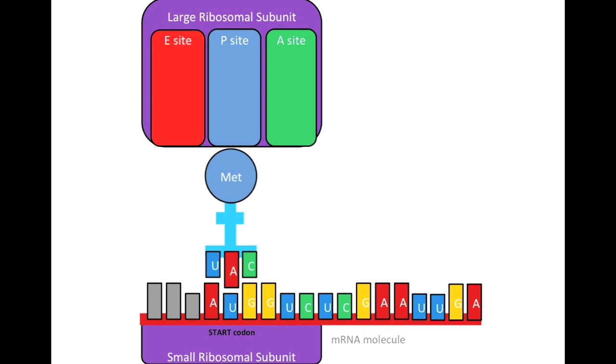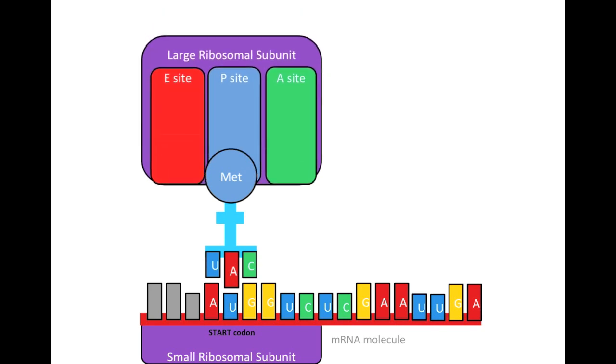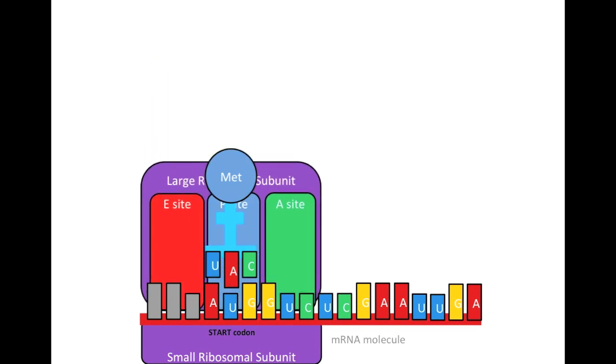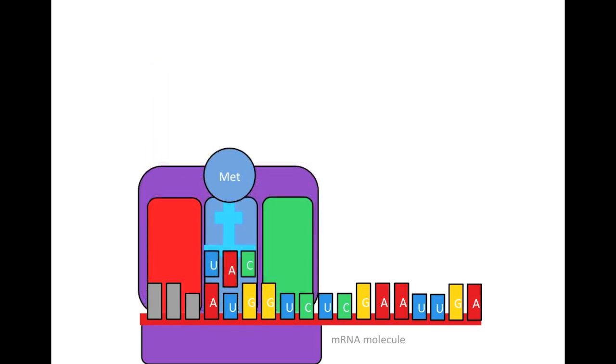It is worth showing, before bringing the large ribosomal subunit into place, that there are three distinct sites to the large ribosomal subunit: the A site, the P site, and the E site. Now that the translation complex is fully assembled, we can proceed with the next step in translation.